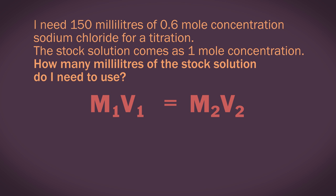So we have our M1V1 equals M2V2 equation. Here, our before values are M1 equals 1, and we don't know V1. Our post-dilution values are M2 equals 0.6, and V2 equals 150 moles.